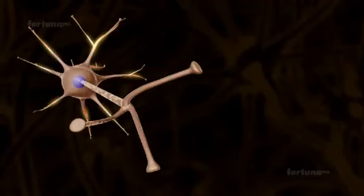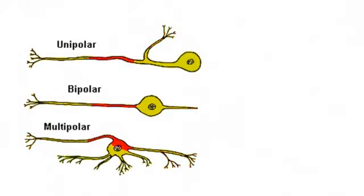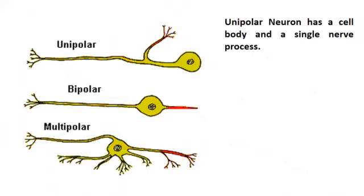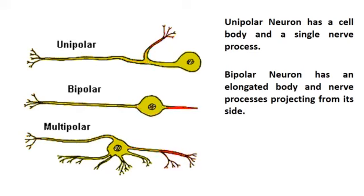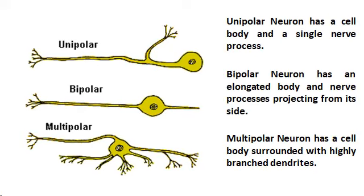Neurons are classified according to structure and function. According to structure, neurons may be unipolar, bipolar, and multipolar. A unipolar neuron has a cell body and a single nerve process, and is present during the early stages of development. A bipolar neuron has an elongated body and nerve processes projecting from its side, while a multipolar neuron has a cell body surrounded with highly branched dendrites.